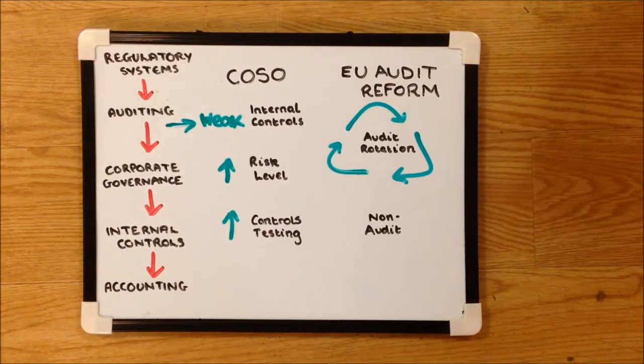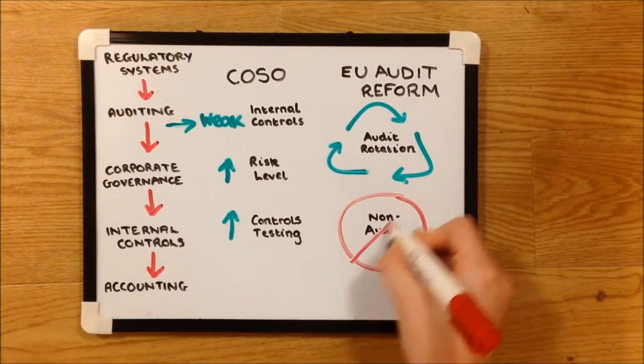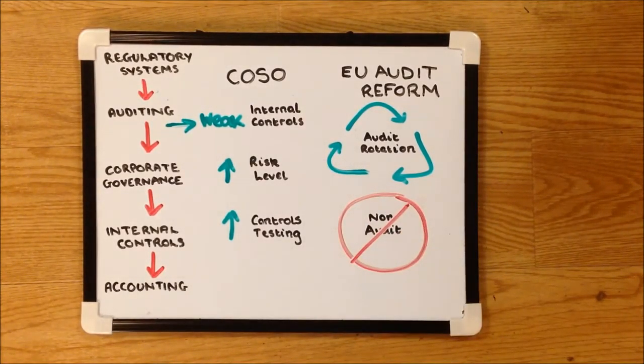PwC were replaced by Deloitte after the scandal, and Tesco should ensure they change their auditor regularly to avoid another familiarity threat. The reforms also include limits on the provision of non-audit services and bans on certain services. This will help to prevent a self-interest threat.